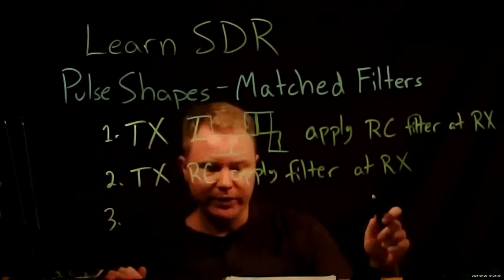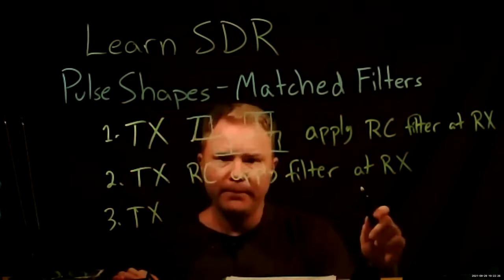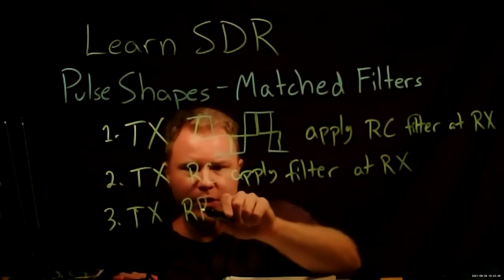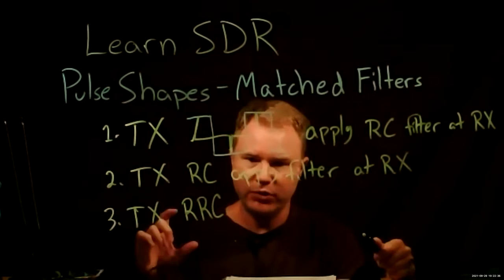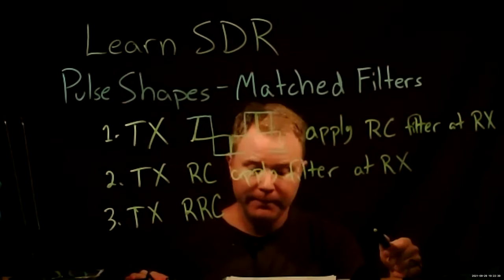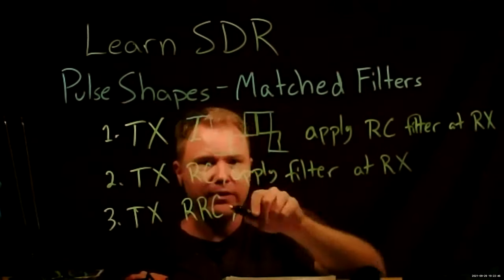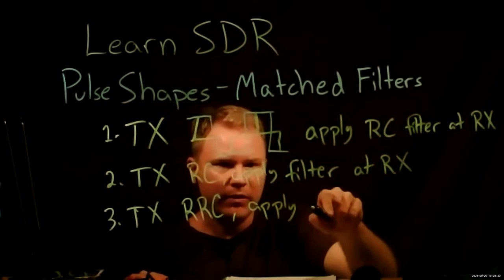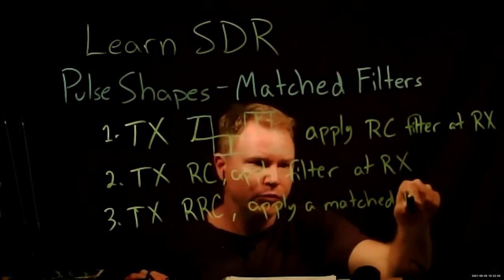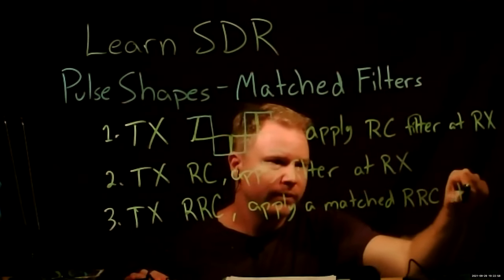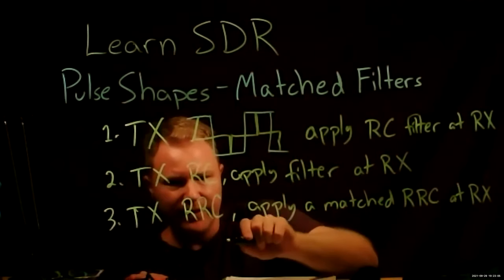And so option number three, which is what we choose, is that we transmit what are called the square root raised cosine pulses. And this has a frequency response that's just the square root of the one that I drew and the pulses in time look very similar. And then at the receiver, we apply a matched root raised cosine filter.